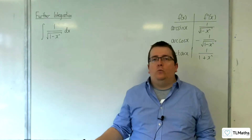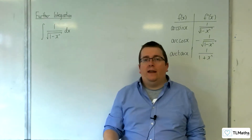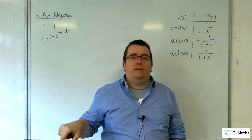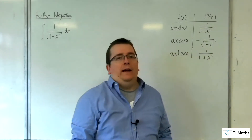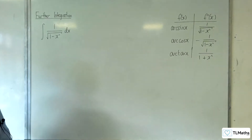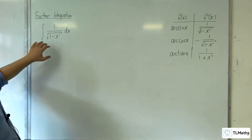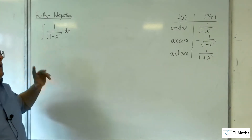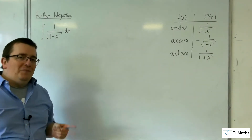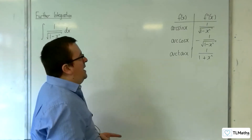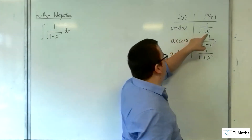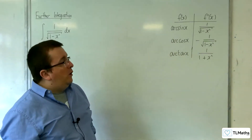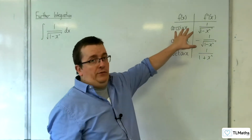In the previous section, we were looking at differentiating inverse trig. And in this section, we are going to be integrating to arrive at inverse trig. What I first want to look at is the integral of 1 over the square root of 1 minus x squared dx. We know what the answer should be, because we know that arc sine x differentiates to 1 over the square root of 1 minus x squared. So the answer should be arc sine x plus c.